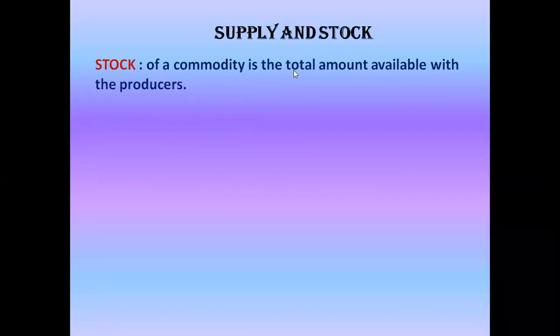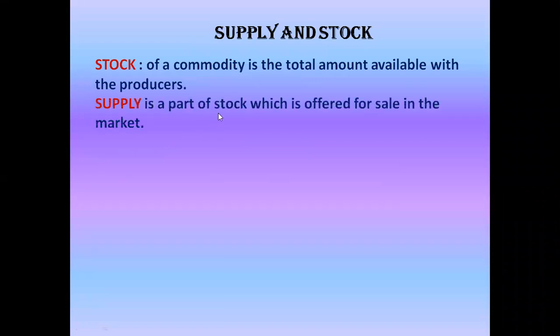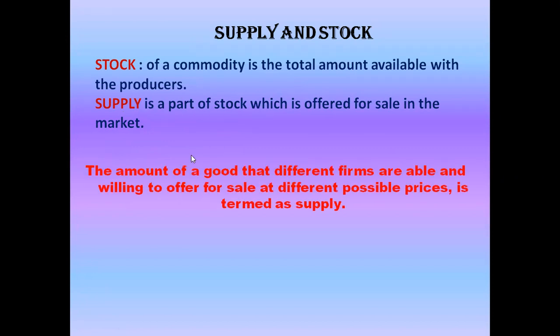Let us first see the difference between supply and stock. Stock of a commodity is the total amount available with the producers — whatever amount a producer produces, that is the stock. Supply is a part of stock which is offered for sale in the market. If a producer is expecting a rise in price, the supply will be less. The producer will keep stock and supply more when the price changes. So supply is always a part of stock.